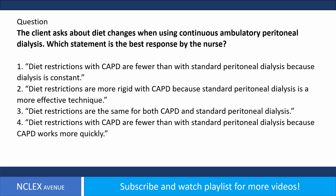The client asks about diet changes when using continuous ambulatory peritoneal dialysis (CAPD). Which is the best response by the nurse? One, diet restrictions with CAPD are fewer than with standard peritoneal dialysis because dialysis is constant; two, diet restrictions are more rigid with CAPD because standard peritoneal dialysis is a more effective technique; three, diet restrictions are the same for both CAPD and standard peritoneal dialysis; four, diet restrictions with CAPD are fewer than with standard peritoneal dialysis because CAPD works more quickly.